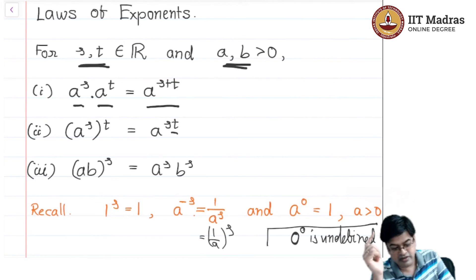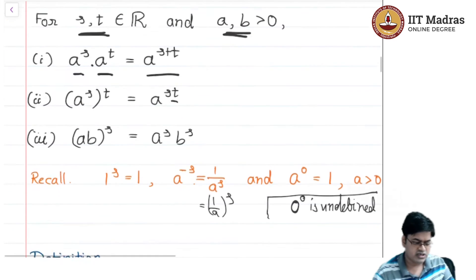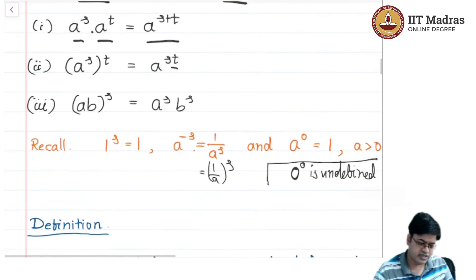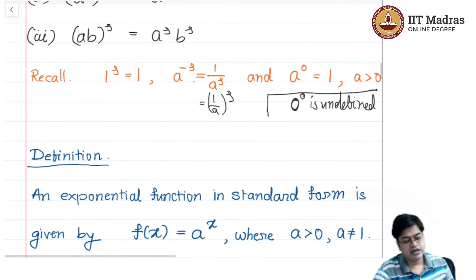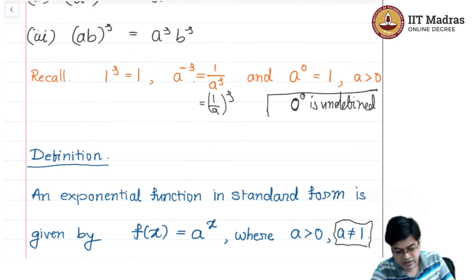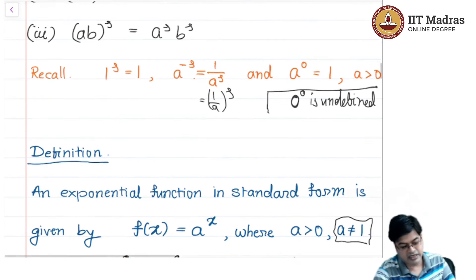With this understanding, we have revised laws of exponents which we will use left and right. You better remember all these laws, and therefore we are ready to set a framework of exponential function. Here is our definition: an exponential function in standard form is given by f(x) = a^x, where a > 0 and a ≠ 1. There is a new condition that we have introduced. We have seen why a should be greater than 0, but here they are saying a is not equal to 1. This needs further analysis. We will analyze it in due course.